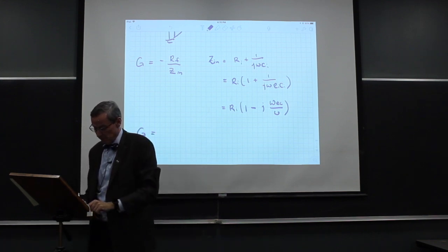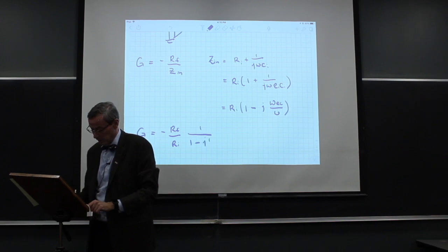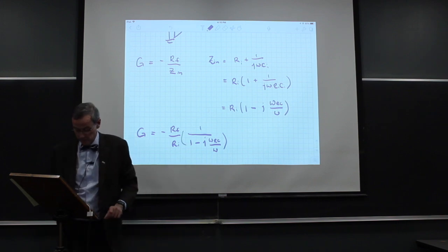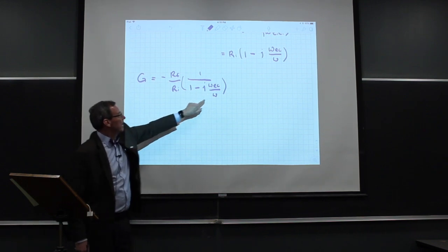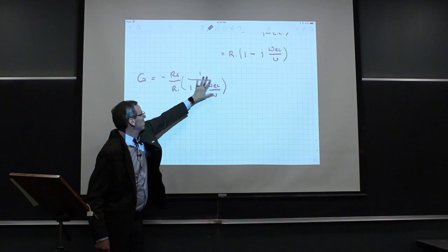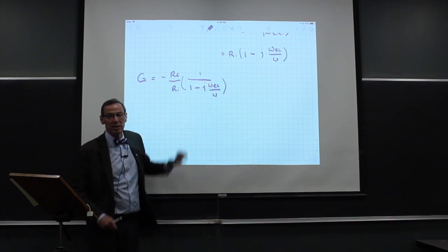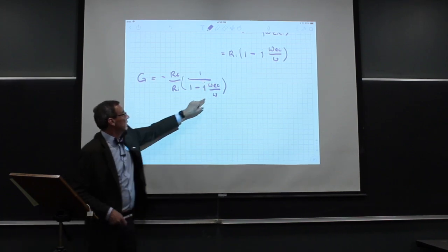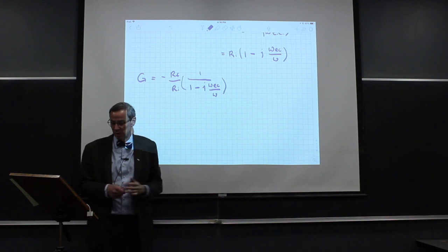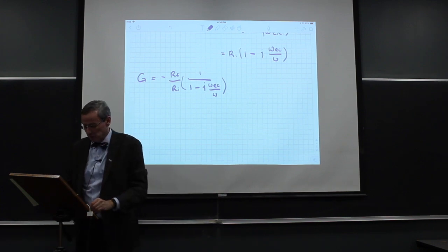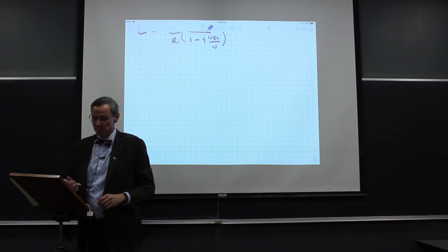The gain is now minus R_F over R_N over (1 minus j·omega_RC / omega), and this is the factor we had for a high-pass filter. As omega gets very large, the j·omega_RC/omega piece goes to zero and we simply get a factor of 1, so high frequencies let the signal through. At low frequencies, this piece dominates and we get something that's proportional to omega over omega_RC, so it rises. This high-pass filter is definitely going to be limited by the open loop gain.